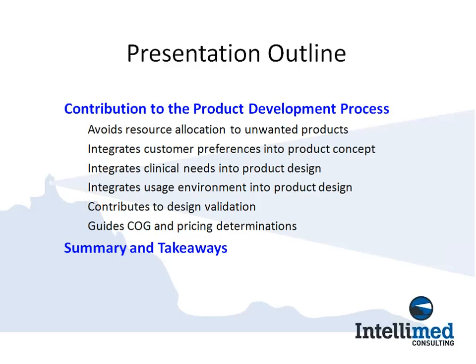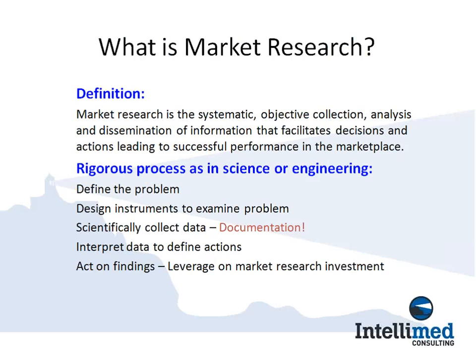Here is a brief summary and key takeaway. The definition of market research: it is a systematic, objective analysis and dissemination of information. By doing these four things with information, we facilitate decisions and actions that lead to successful performance in the marketplace. It's a rigorous process — in many ways just like science. We have to define the problem, design the instruments to examine the problem, collect the data scientifically, document it, and interpret the data so we can take action. Once we get the information, if we don't disseminate it and turn it into action, we've wasted a lot of resources.